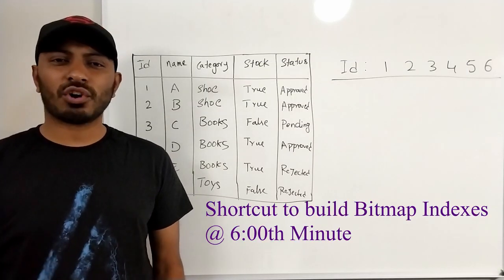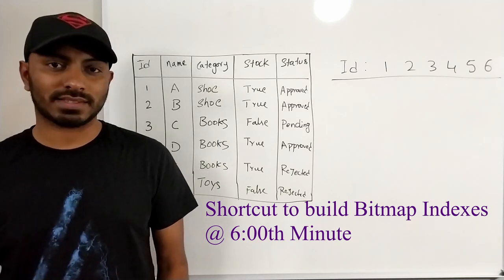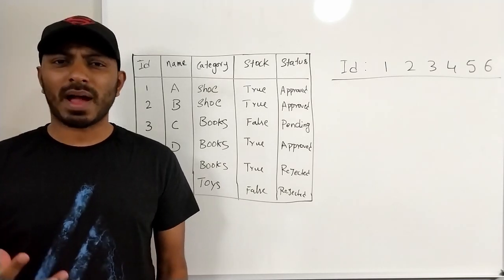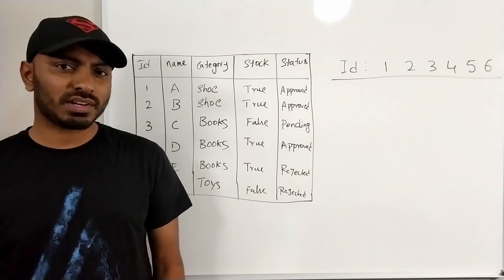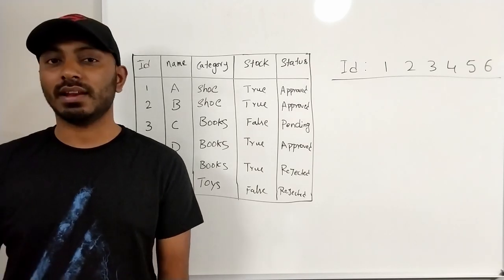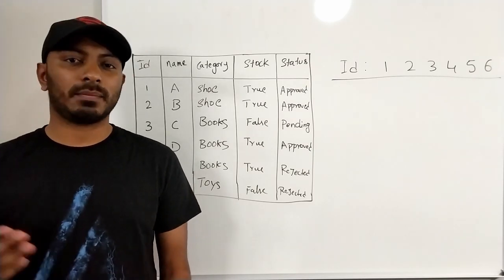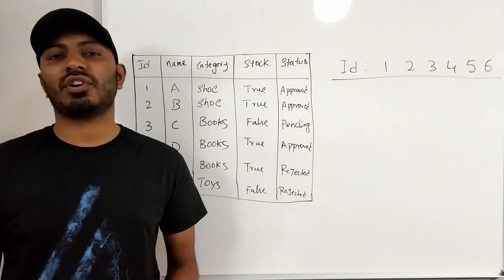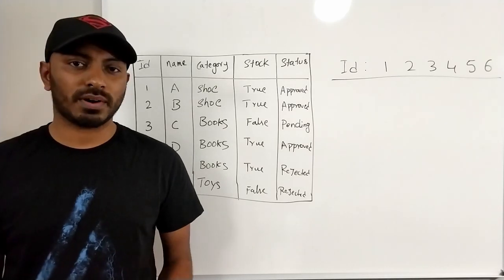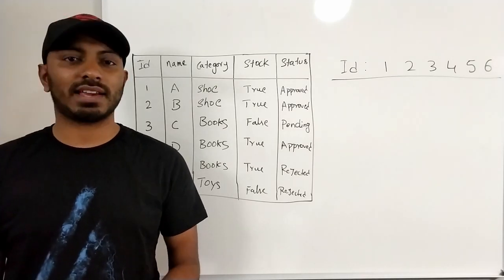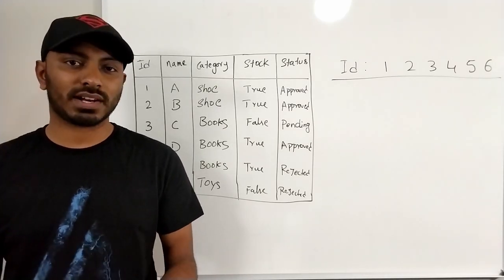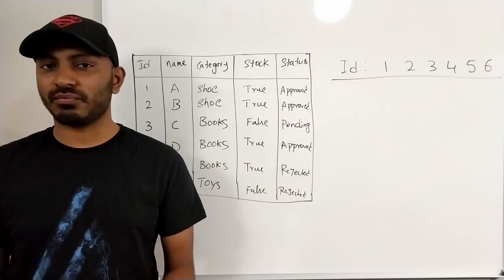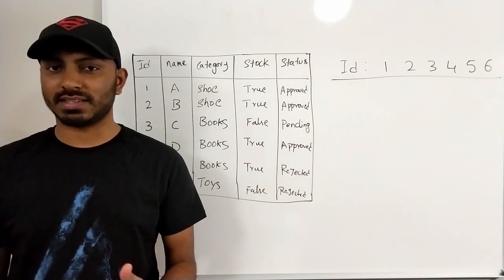So why are we talking about bitmap indexes? Are bitmap indexes so much more efficient that we can totally stop using B+ tree or AVL tree? The answer is not really straightforward. There is no data structure that is a silver bullet where you can use one for all different purposes, and the same goes for database indexing as well.